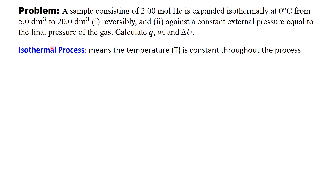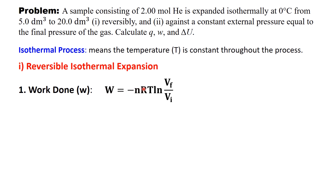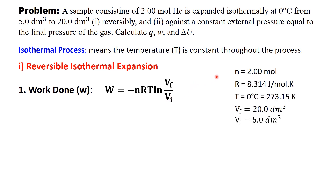Isothermal process means the temperature, T, is constant throughout the process. Let's start with the reversible isothermal expansion. The work done by the gas in a reversible isothermal expansion is given by W equals minus nRT times the natural log of V final divided by V initial.